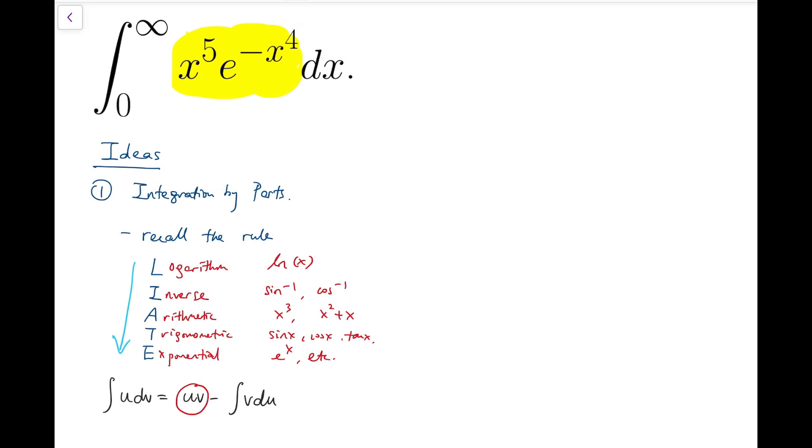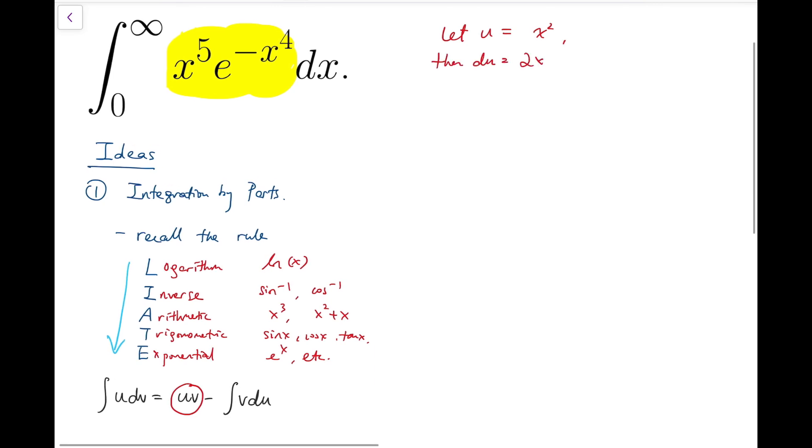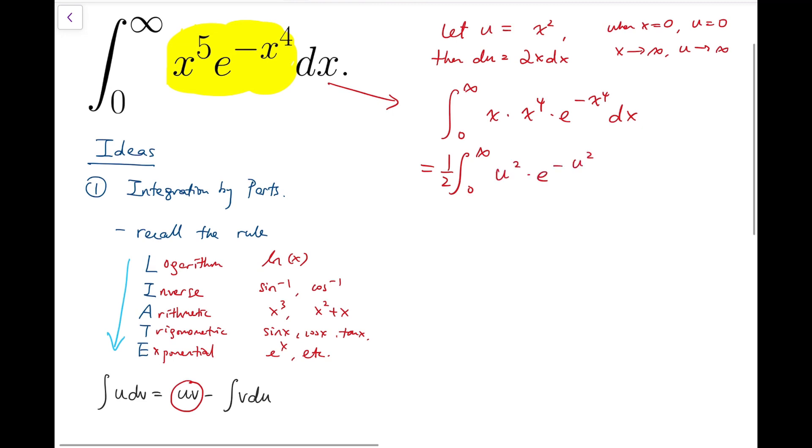Now, before I really do the integration by parts, let me do one simple substitution to make this expression better looking. First, I'm going to let u equals x squared, then du equals 2x dx, and when x equals 0, u equals 0, and whereas x tends to infinity, u tends to infinity as well. So this integral becomes integrating over from 0 to infinity of x times x to the 4 times e to the minus x to the 4, and then it becomes half of the integral from 0 to infinity of u squared times e to the minus u squared du.